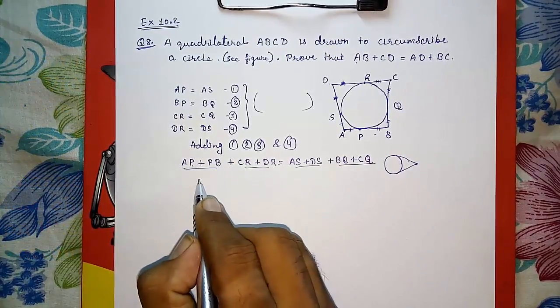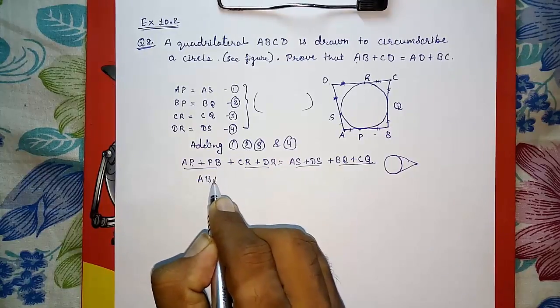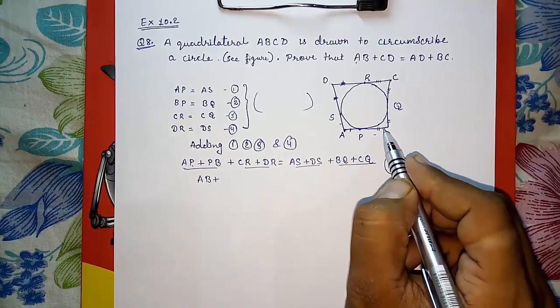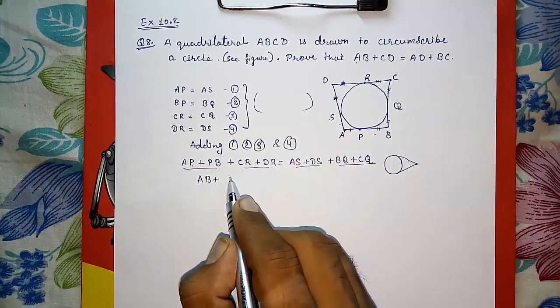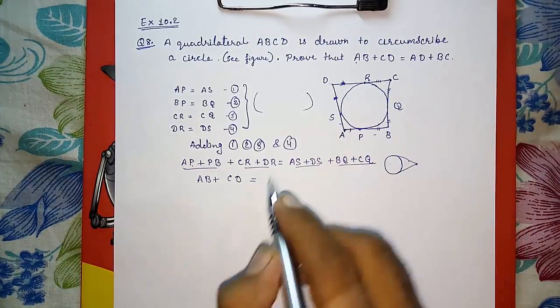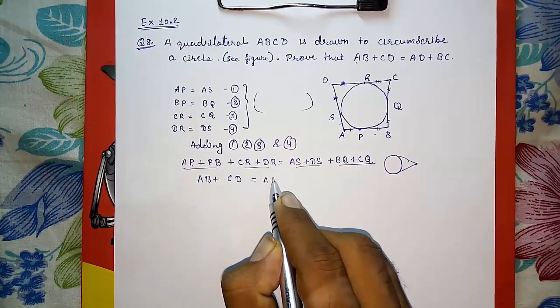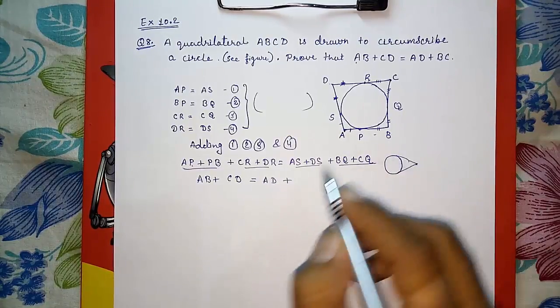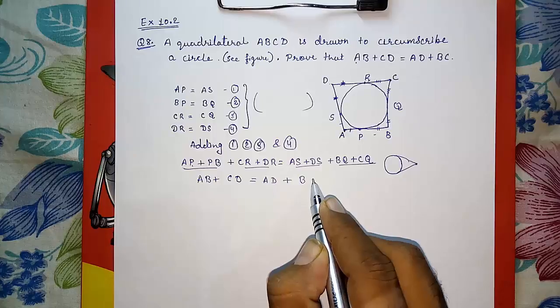AP plus PB will give you AB, and CR plus DR will give you CD, equals to AS plus DS. So that is AD plus BQ plus CQ, that is BC.